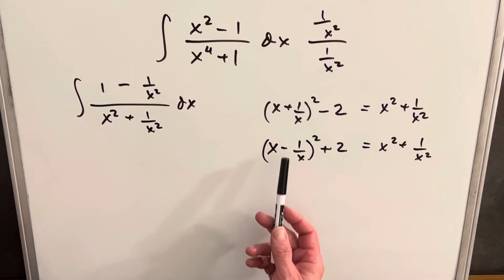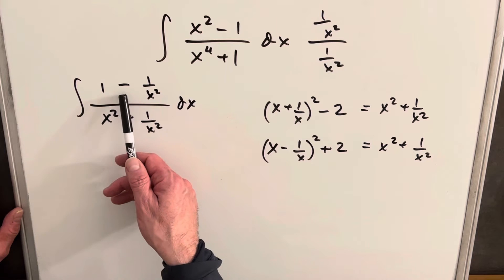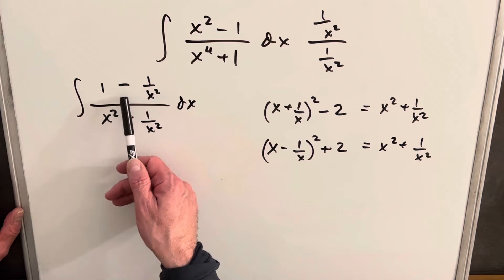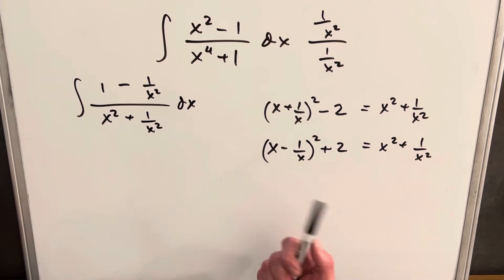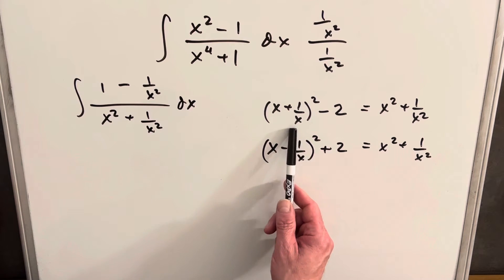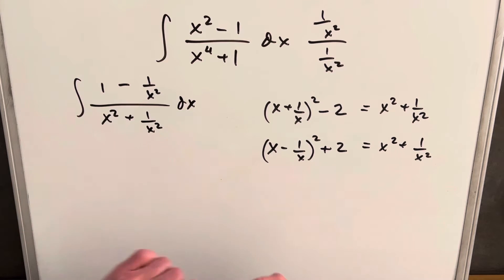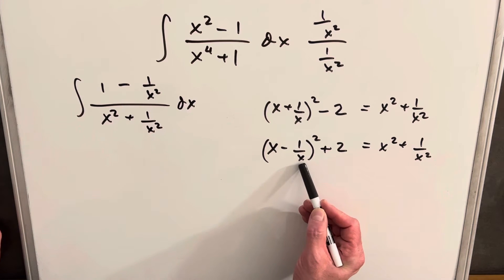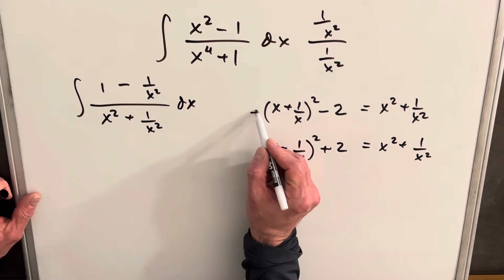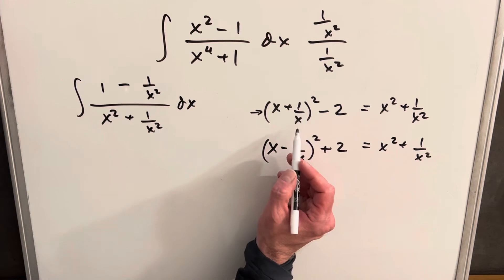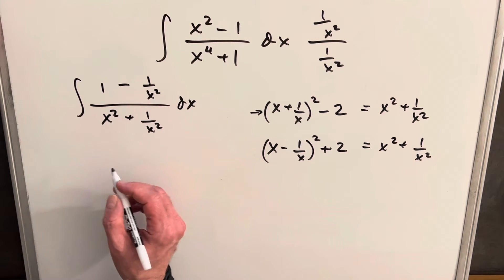We've got to figure out which form to use — it's all about the sign in the numerator. When we make a u substitution, we want to choose u so that differentiating it gives us back the numerator. The second form gives a positive when differentiated, but the first form — x plus 1 over x — when differentiated gives us back the negative sign we need. So we'll use the first one.